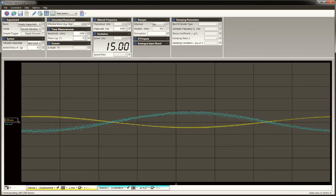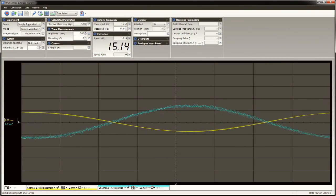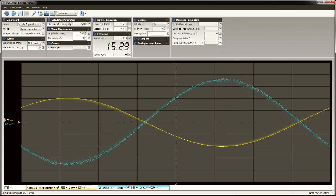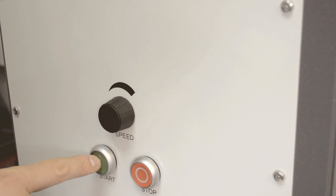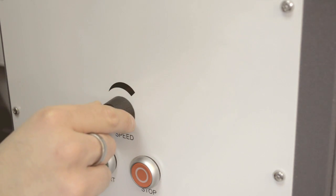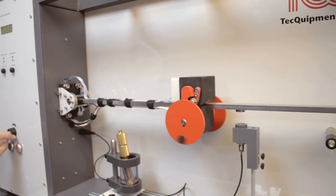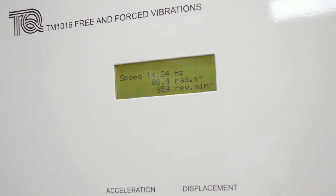The VDAS Mark II software includes functions to display live plots of first and second derivatives to show velocity and acceleration waveforms based on the displacement signal. A digital display shows the motor speeds in units of frequency in Hertz, radians per second and revolutions per minute.